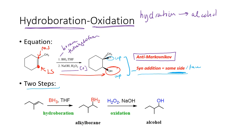In the hydroboration step starting with the alkene, you end up with a BH2 group on the least substituted side. The alkyl borane is then oxidized in the oxidation step using hydrogen peroxide in basic conditions — such as sodium hydroxide — which converts the alkyl borane to an alcohol. The end result is an alcohol placed on the least substituted side of the alkene, with a hydrogen added to the most substituted side, both on the same face.